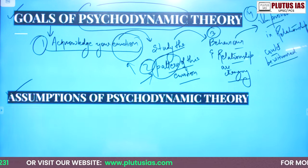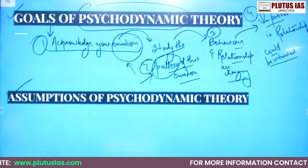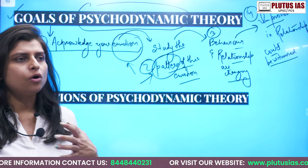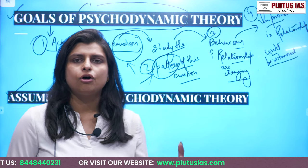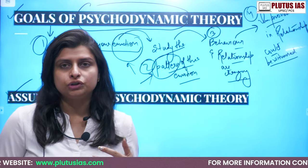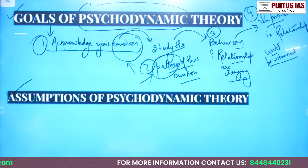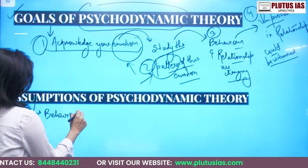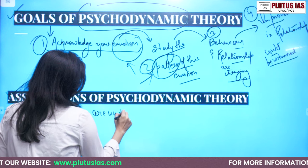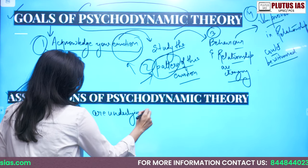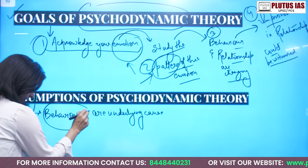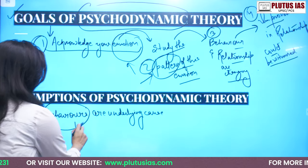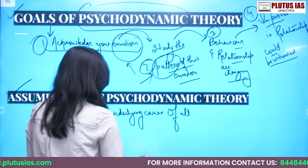The second part discusses the assumptions of psychodynamic theory. What are the assumptions of psychodynamic theory? The assumption starts from the fact that all behaviors of humans are always connected with emotions. That means our behaviors are the underlying cause of everything — if we behave properly, everything is going to get on track. That's what psychodynamic theory says: behaviors are the underlying cause of all.